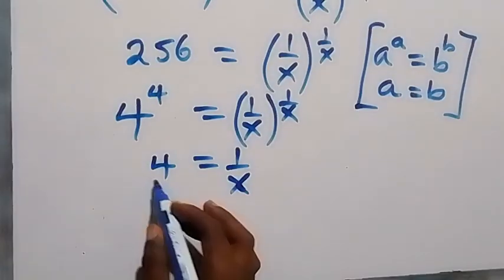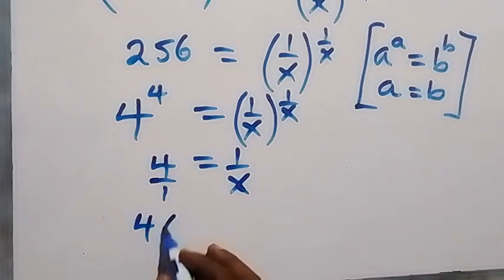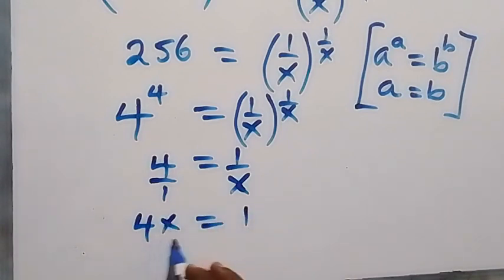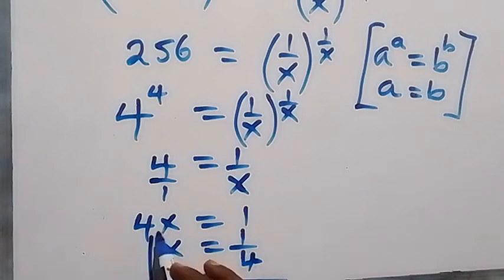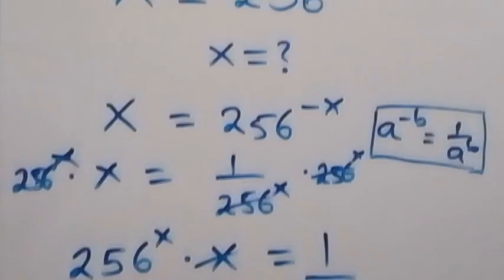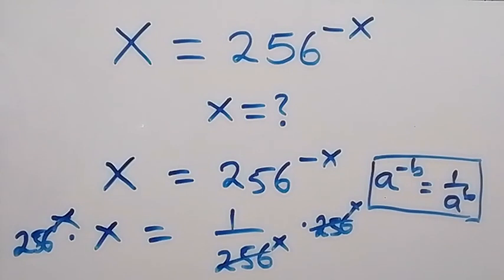Since the base equals the power on both sides, we can equate: 4 equals 1 over x. Cross-multiplying gives 4x equals 1, so x equals 1 over 4. The value of x from this problem is 1 over 4.